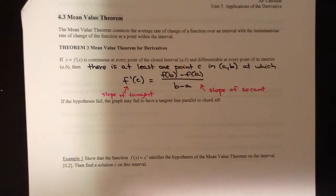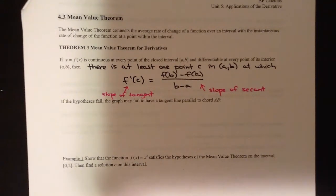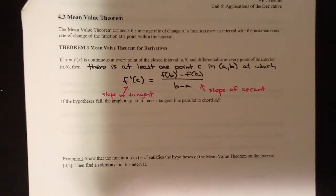If the slope is the same, that means they are parallel. So by the MVT, there exists at least one tangent line that's going to be parallel to the secant line. That's what this tells us.